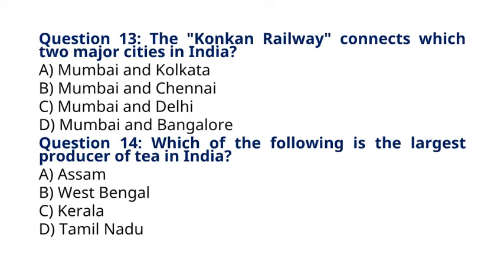Question 13: The Konkan Railway connects which two major cities in India? A. Mumbai and Kolkata, B. Mumbai and Chennai, C. Mumbai and Delhi, D. Mumbai and Bangalore. The correct answer to question 13 is option B, Mumbai and Chennai. The Konkan Railway runs along the Konkan coast, connecting Mumbai in Maharashtra to Bangalore in Karnataka and further down to Chennai in Tamil Nadu.